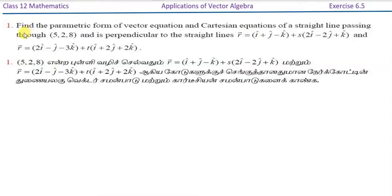Unit 6, Exercise 6.5, question number 1. Find the parametric form of vector equation and Cartesian equations of a straight line passing through the point (5, 2, 8) and is perpendicular to the straight line with two vector equations.